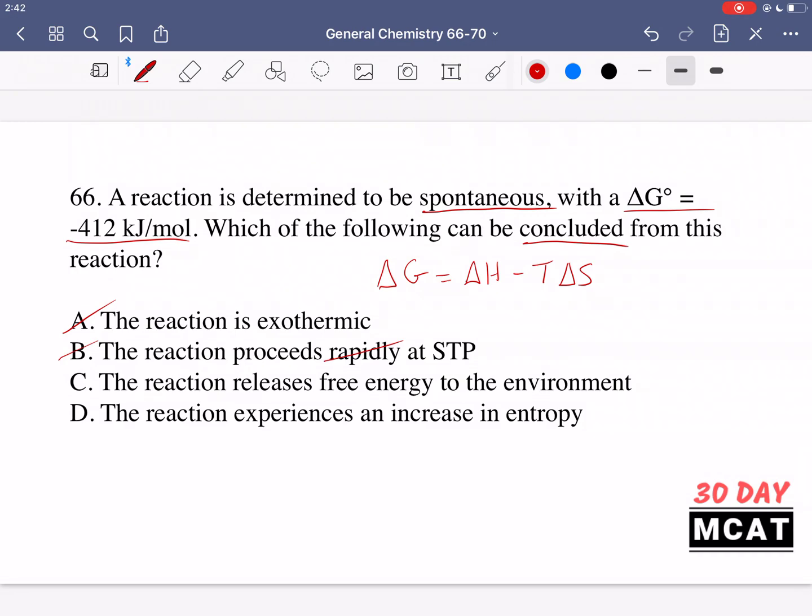And it can do this on its own without us having to manipulate it by giving it more temperature or giving it a catalyst or anything like that. It'll just go on its own. But it doesn't tell us anything about the rate. It could take a very long time to go from reactants to products. So rate has to be measured separately. You can't just conclude it like that.